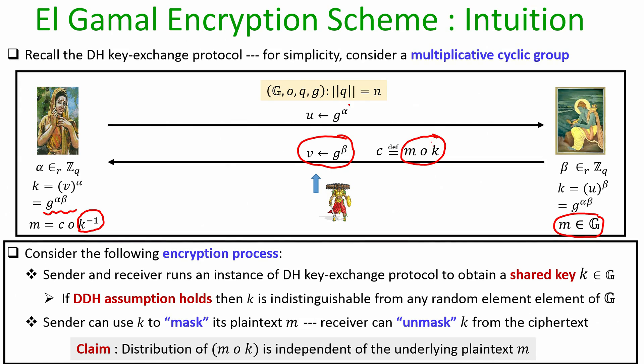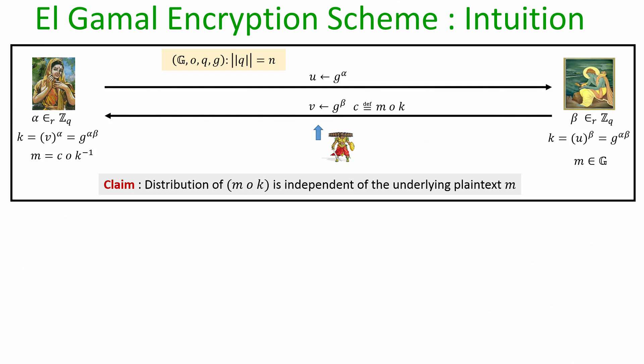I claim that the ciphertext C, which is the group operation on the plaintext and key K, is going to be independent of the underlying plaintext M. If this claim is true, then this whole process of encryption and decryption looks like a candidate encryption scheme — because if the distribution of ciphertext C is independent of the plaintext, then after seeing C the adversary cannot figure out whether it is an encryption of M0, M1, or M2. That is the overall intuition of the ElGamal encryption scheme.